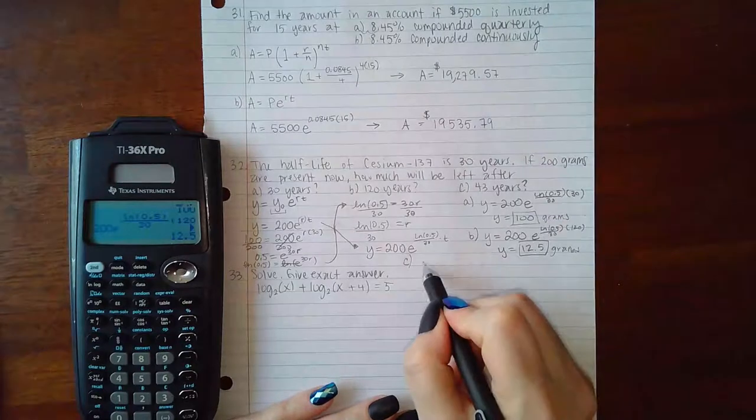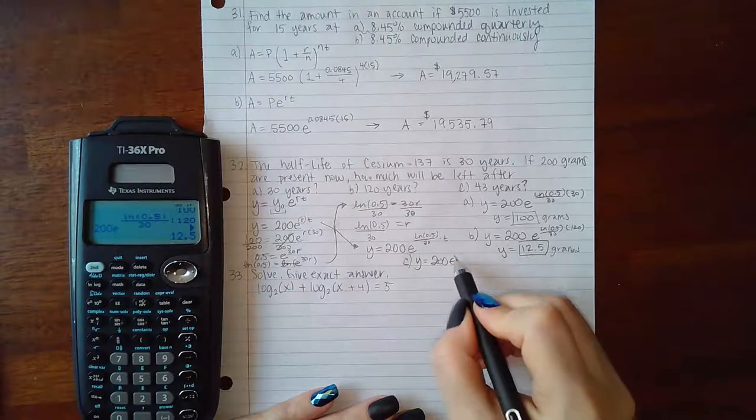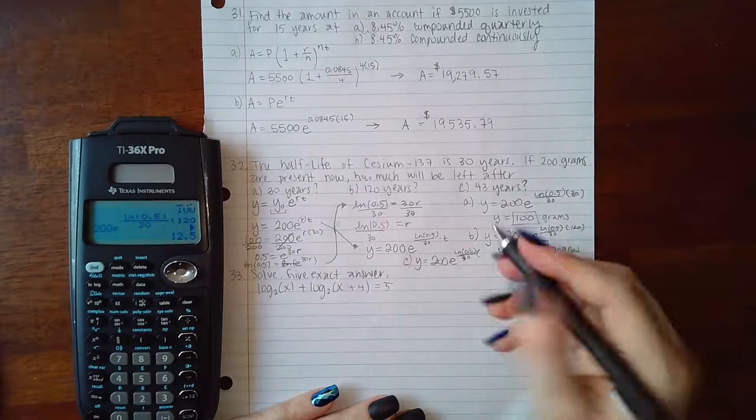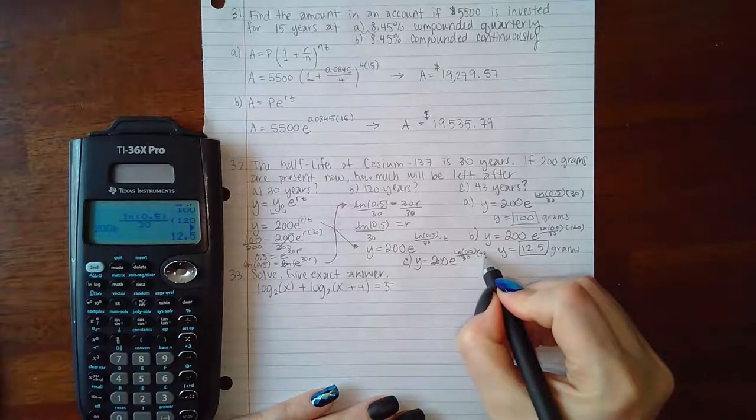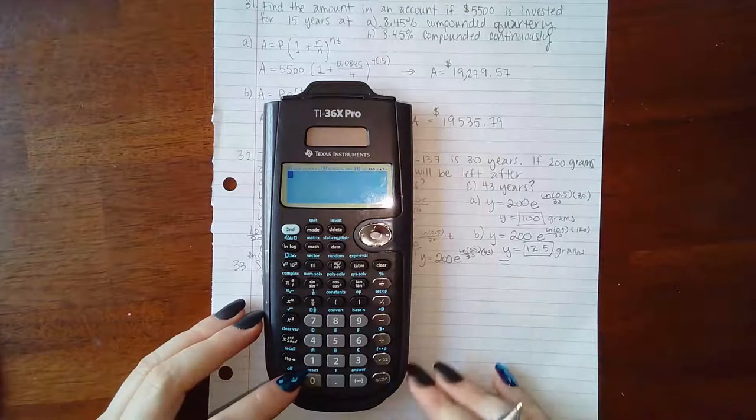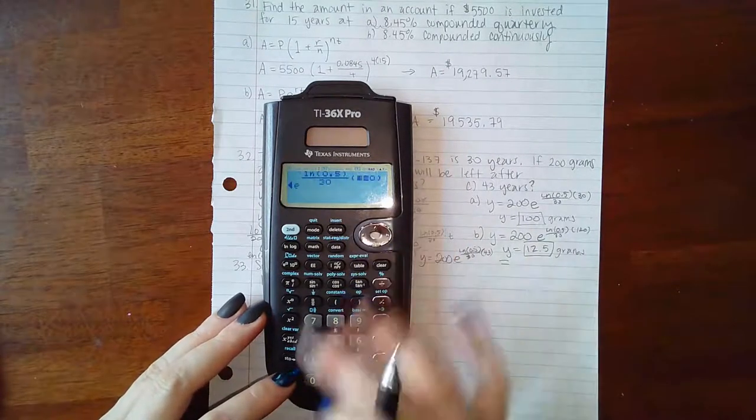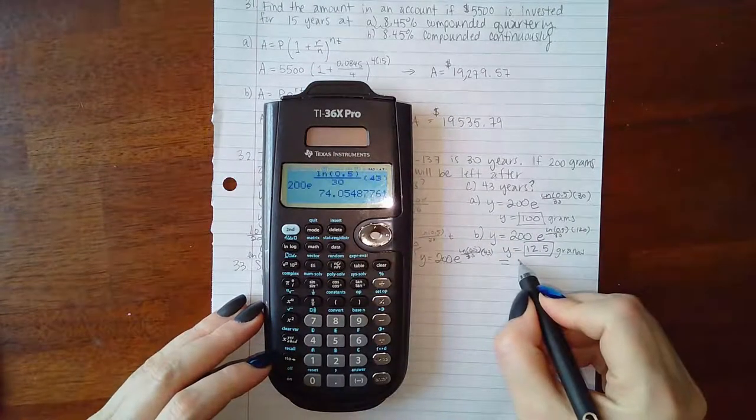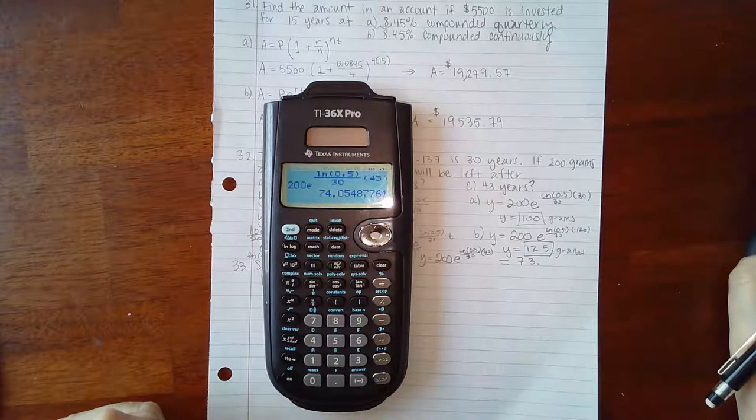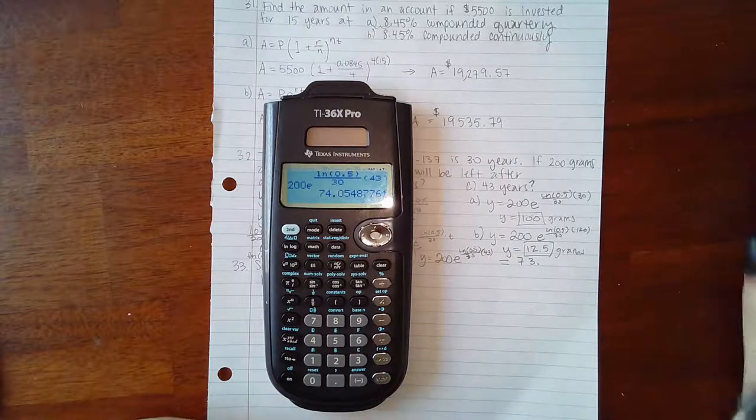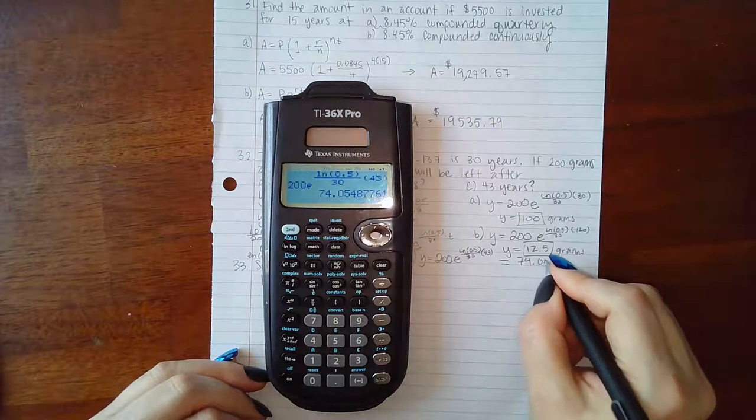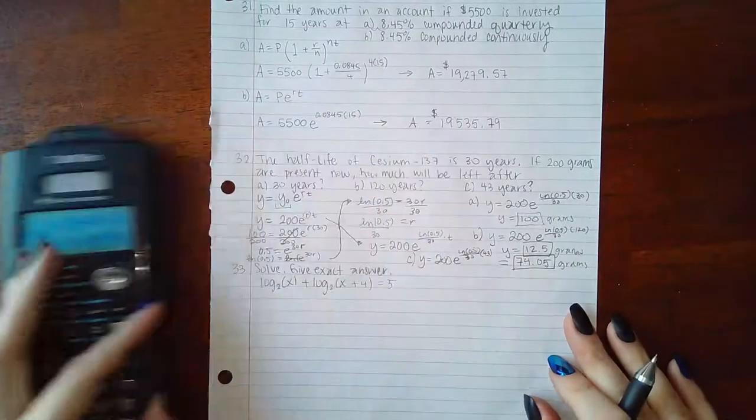Finally, part C, I'm going to scoot over here a little bit because I don't want to run into the other problem. How much would I have after 43 years? So again, now we're plugging in 43. So 43 years occurs sometime between 30 years and 120, probably closer to 30 years, so the answer should be a little bit closer to 100 but not quite 100. I got to copy that again, and now I'm going to plug in 43. We get 73 points—normally the instructions will tell you what to round to, but for this problem, probably going to round just to the hundredths place, so the four will not change the five. So I should end up with 74.05 grams. And that is the end of number 32.